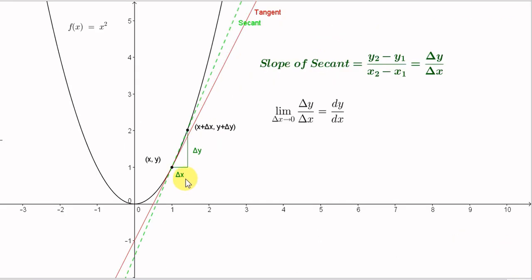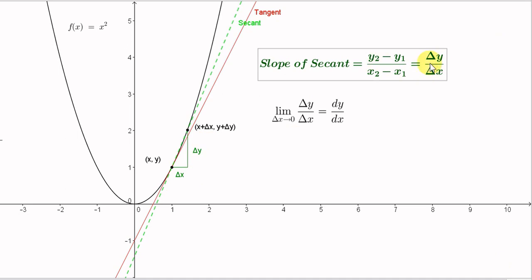You might be using an alternative notation for the derivative of a function. Instead of h, the horizontal distance between the two points on the secant, we use delta x — the Greek letter delta. The vertical distance between the two points, the rise, is called delta y. So the slope of the secant is delta y over delta x. The word delta should suggest the word difference — d for delta, d for difference.